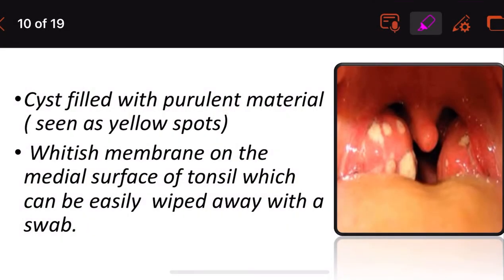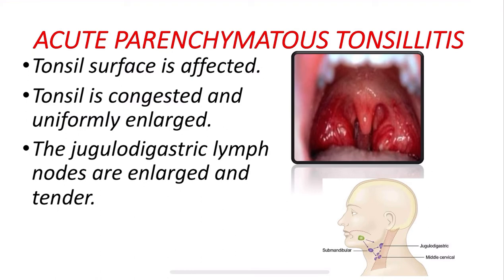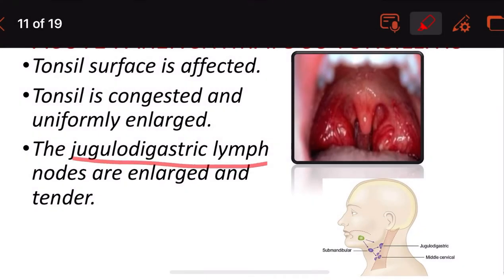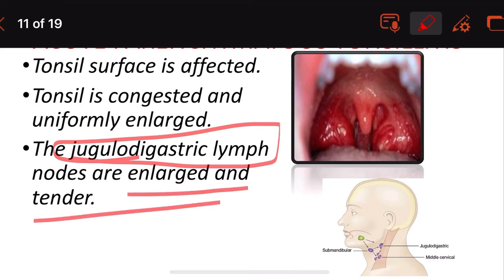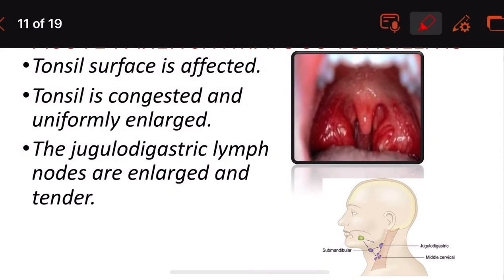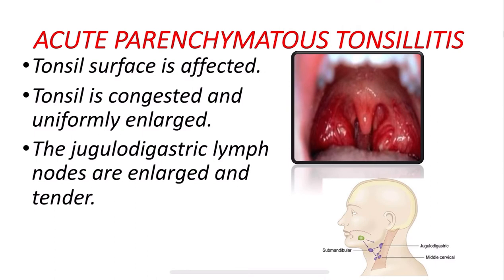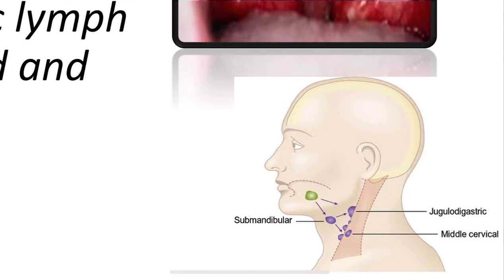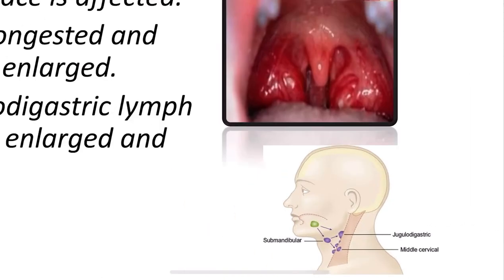In acute parenchymatous tonsillitis, the tonsil surface is affected — the tonsil is congested and uniformly enlarged. The jugulodigastric lymph nodes become enlarged and tender. You can see the jugulodigastric lymph nodes near the tonsils; they will be enlarged in this type.